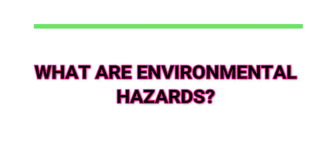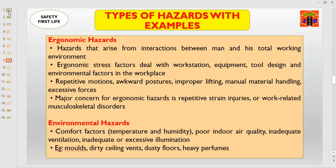What are environmental hazards? Comfort factors such as temperature and humidity, poor indoor air quality, inadequate ventilation, and inadequate or excessive illumination. Other examples of environmental hazards include dirty ceiling vents, dusty floors, and heavy perfumes.